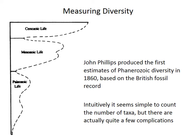The first diversity curve was produced more than 150 years ago. John Phillips basically counted up the number of taxa in the British fossil record to make this curve. And it's actually not too different from our current view, although obviously not as detailed as we now know. It recognizes things like the Permian extinction and the Cretaceous extinction.